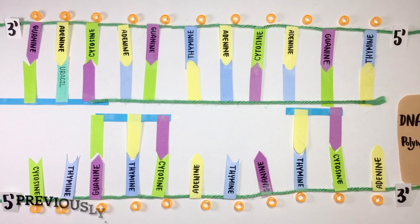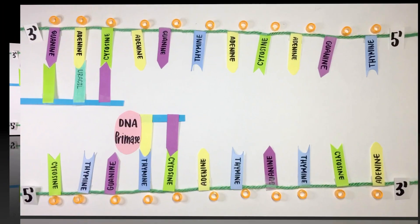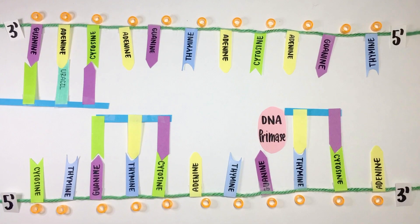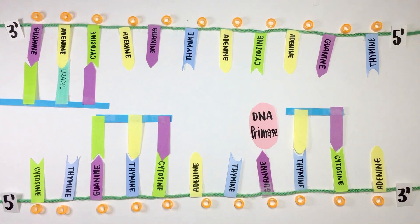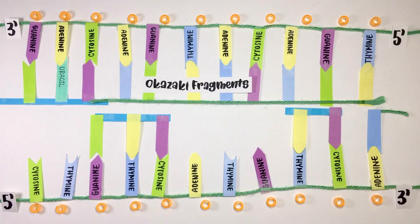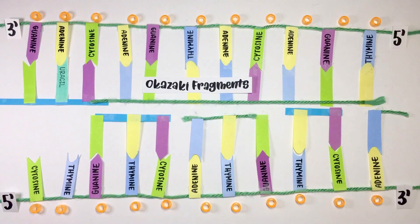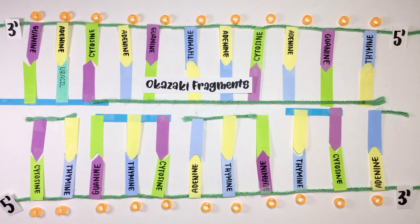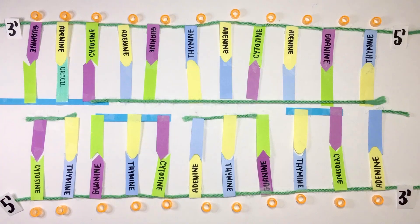In contrast to the leading strand, the lagging strand has several binded RNA primers which are placed numerous bases apart. In order to fill these gaps, DNA polymerase adds fragments of DNA called Okazaki fragments between the RNA primers from a 3' to 5' direction. However, this process is still discontinuous, which means that even the newly synthesized Okazaki fragments have small gaps in between them.